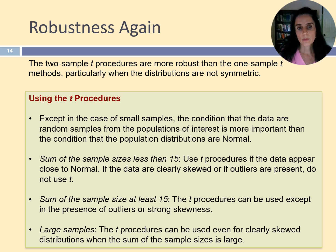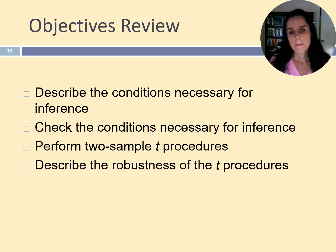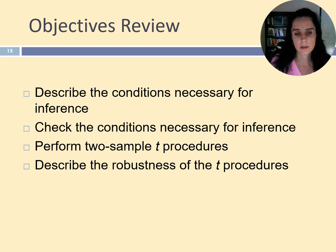T-procedures with two samples are more robust to non-normality than the one-sample t-methods. In general, the condition of having randomly selected samples is more important than the shape of the distribution. We must also make sure we have an adequate sample size. When the two sample sizes add up to less than 15 individuals, we can only use the t-procedure if the distribution is close to normal. However, when samples are large, the t-procedures can be used even when the distribution is not normal or not symmetrical, as long as there are no strong outliers. In this presentation, we discussed how to make inferences about two population means using t-procedures for independent samples, and showed how to estimate a confidence interval and test whether the difference is statistically significant.